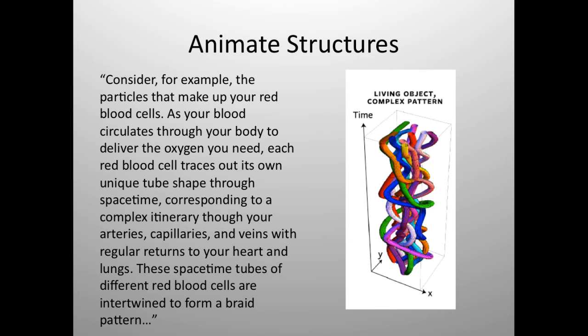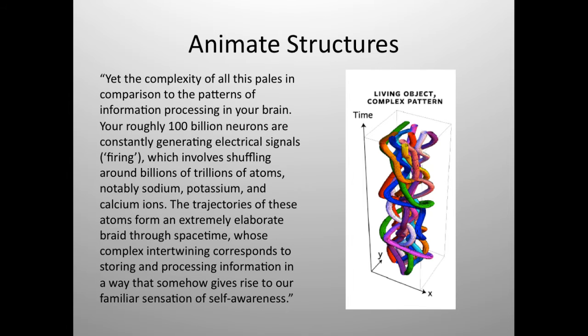the particles that make up your red blood cells. As your blood circulates through your body to deliver the oxygen you need, each red blood cell traces out its own unique tube shape through space-time, corresponding to a complex itinerary through your arteries, capillaries, and veins, with regular returns to your heart and lungs. These space-time tubes of different red blood cells are intertwined to form a braid pattern. Yet the complexity of all this pales in comparison to the patterns of information processing in your brain.